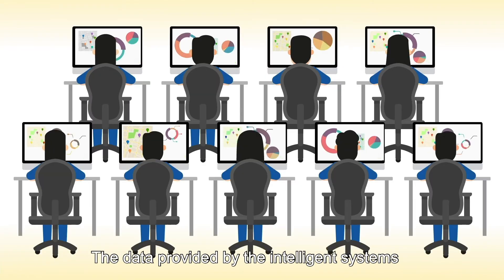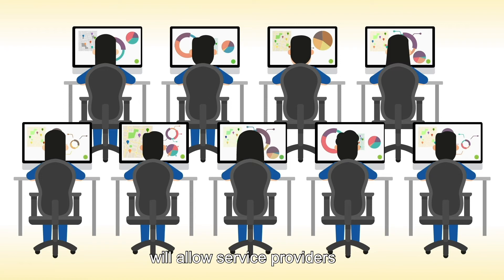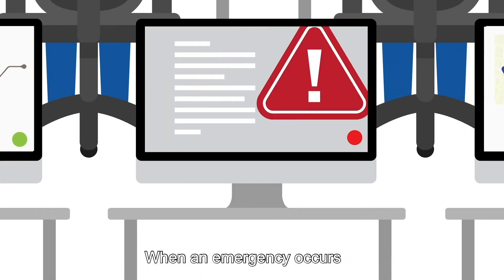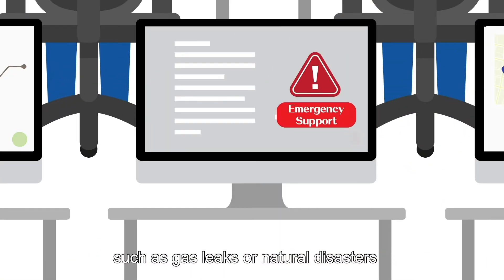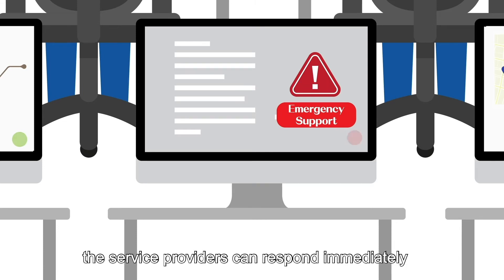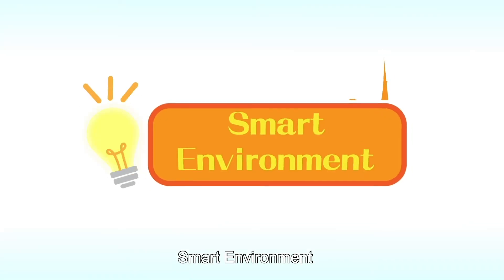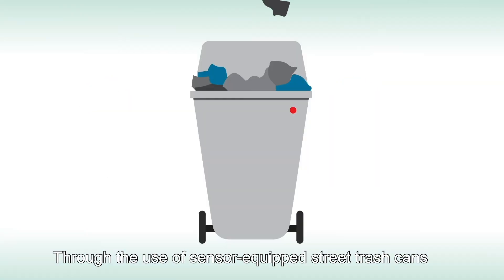The data provided by intelligent systems will allow service providers to grasp the overall usage, to manage the system load, and to respond to the needs of different periods. When an emergency occurs, such as gas leaks or natural disasters, the service providers can respond immediately to increase system security.